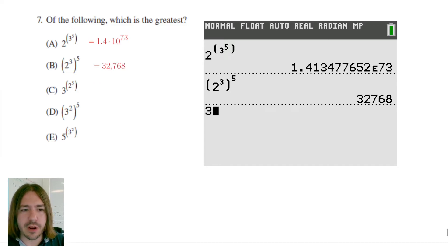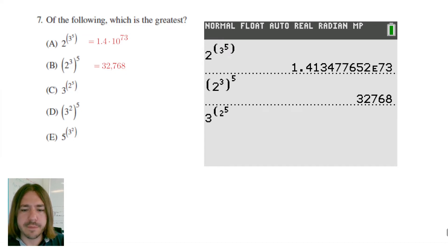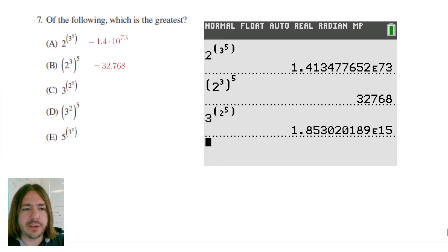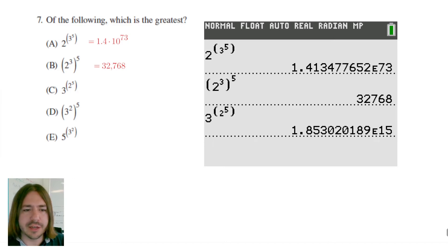Three to the power of two to the power of five — this should be a pretty big one. But not quite as big as A. We got about 1.85, we'll call it 1.9 times 10 to the 15th.